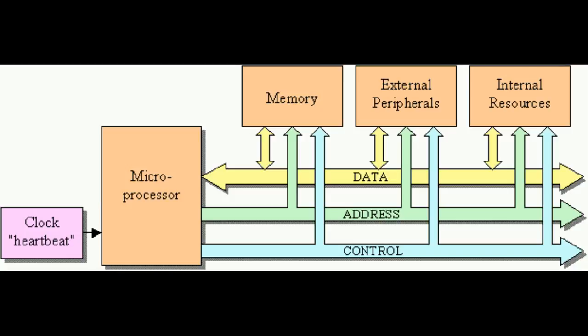Apart from that, there are three buses on a microprocessor. Every microprocessor has three buses: data bus, address bus and the control bus. The data bus is responsible for the transfer of data between the microprocessor and its peripherals or memory. It actually carries the data that is to be sent.